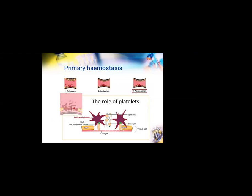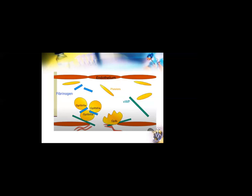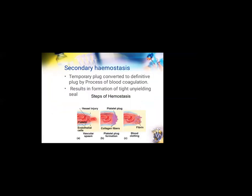Primary hemostasis basically has four steps: adhesion, activation, aggregation, and formation of the platelet plug. The yellow-colored structures in the image are the platelets, and at the bottom of the slide, the pink-colored structures represent the exposed collagen. Whenever there is an injury, the platelets attach to that collagen via von Willebrand factor and they change their shape. They release certain factors which help to attract more platelets to the site, thereby forming a temporary platelet plug. Platelets aggregate and attach to each other by fibrinogen, resulting in formation of a temporary platelet plug which seals the wound.